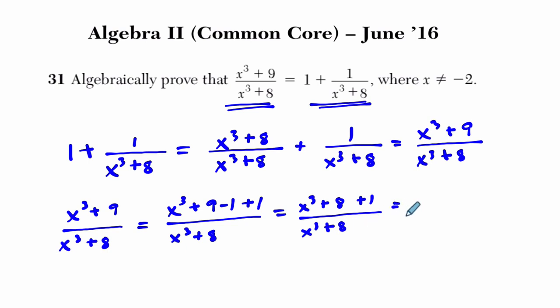And then if we kind of split up our numerator, we get x cubed plus 8 over x cubed plus 8. And then also 1 has to be divided by x cubed plus 8. And this right here, anything divided by itself is 1, plus 1 over x cubed plus 8 is the other side of our equation. So they're equal.